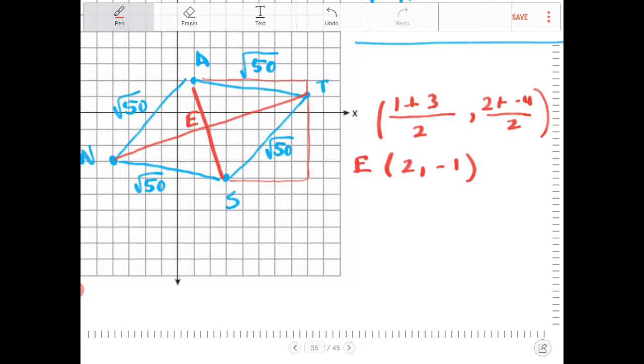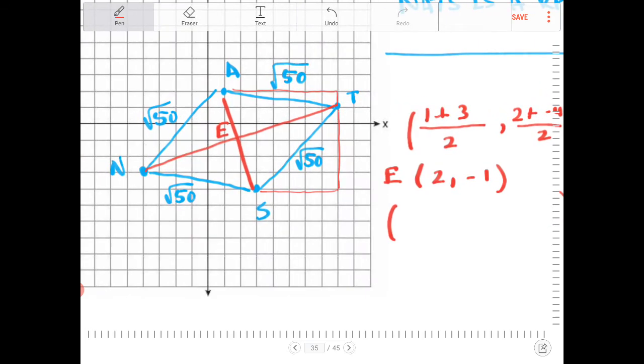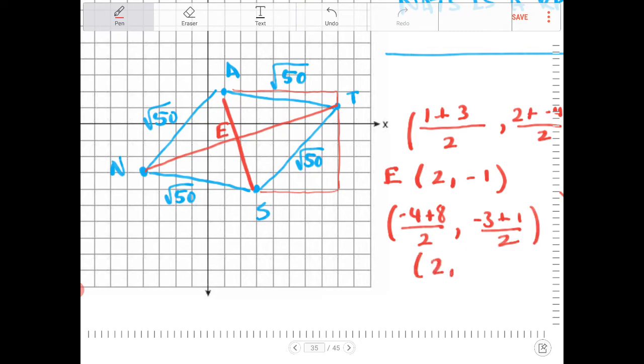So looking at N-T and doing the same thing, I can see that this is going to be negative 4 plus 8, divide by 2. And vertically, it's going to be negative 3, plus 1, divide by 2. So again, this is 2, comma, negative 1.